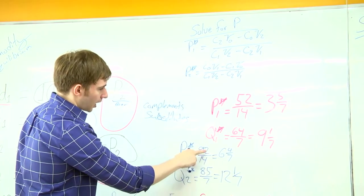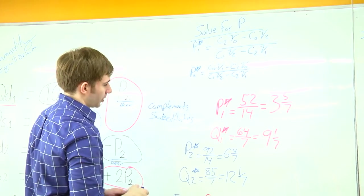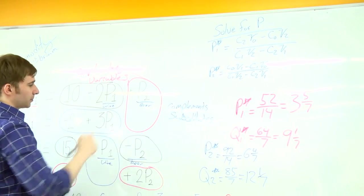For P star 2, I'll get 6 and 4 7ths. And I'll take this value and plug that back in for P 2.